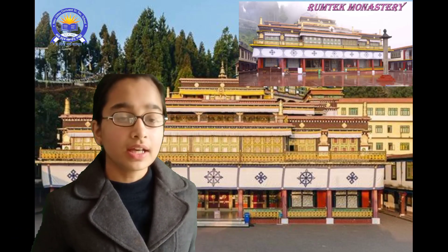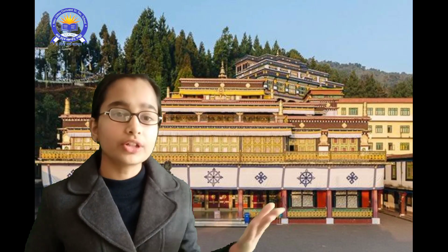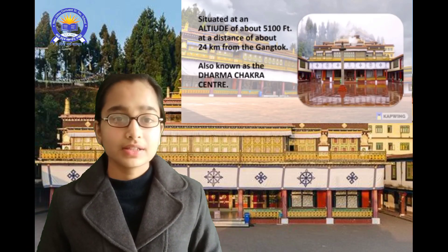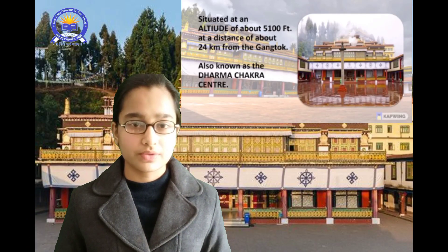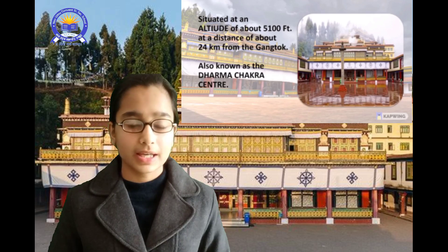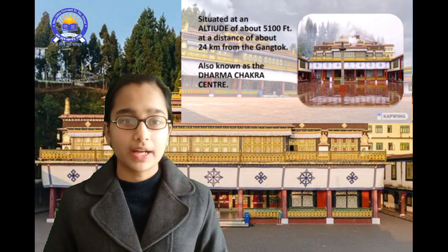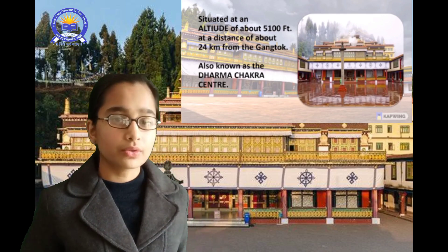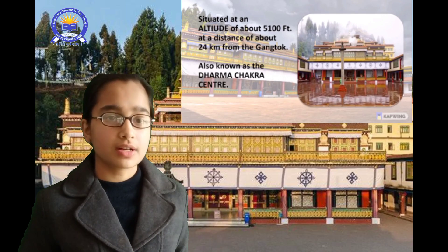The next monument we are going to discuss is the Rumtek Monastery. It is a Tibetan Buddhist monastery located 24 kilometers away from Gangtok at an altitude of 5100 feet. This is one of the most significant monasteries in Sikkim, established to spread the teachings of the Buddha throughout the world. It is also known as the Dharm Chakra Center.